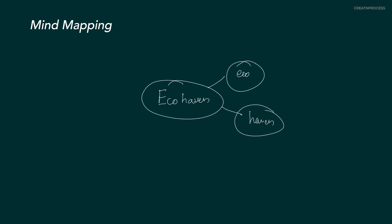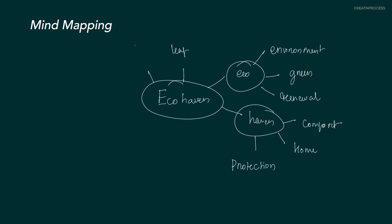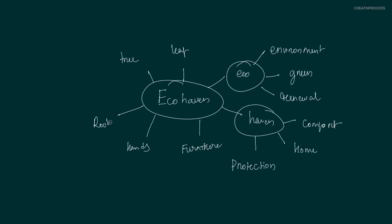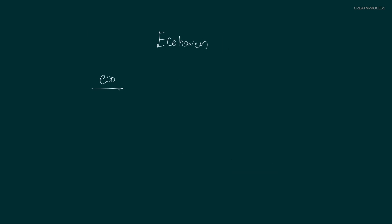For example, if you think about Eco Heaven — eco and heaven — you think about green, home, leaf, tree, nature, roots, growth, recycle, wood, and shelter. Write down all these related ideas on your page just like this. No idea is a bad idea here. Put your logo concept in the center and think of all the related words surrounding that logo and create a mind map.